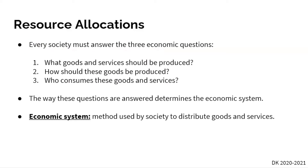Before we get into how they do it, we first have to talk about the three economic questions that every society has to answer. Number one: what goods and services should be produced? Number two: how should these goods be produced? And number three: who consumes these goods and services? How a country or society answers these economic questions determines their economic system.